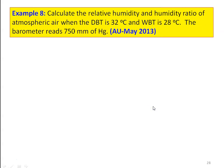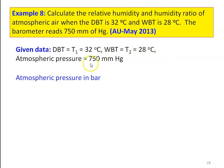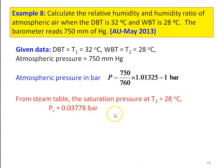Example number 8 from the Anna University question paper, May 2013: calculate the relative humidity and humidity ratio of atmospheric air when the dry bulb temperature is 32 degree Celsius and wet bulb temperature is 28 degree Celsius. The barometer is 750 millimeter of mercury. The barometric pressure is 750 mm of mercury, but actual atmospheric pressure is 760 mm of mercury. Atmospheric pressure in bar: 750 divided by 760 into 1.01325 equals 1 bar. From steam tables, saturation pressure at T2 = 28 degree Celsius, Ps = 0.03778 bar.